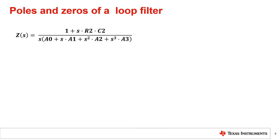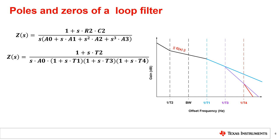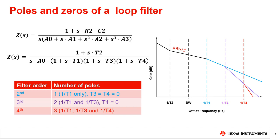The generalized loop filter transfer function we discussed can also be written in terms of poles and zeros. Here T2 is a zero of the transfer function and 1 over T1, 1 over T3, and 1 over T4 are the poles. The gain versus frequency offset graph illustrates how the gain of the open loop transfer function changes with the loop filter order. The blue line shows the gain of the second order loop filter, the purple line shows the gain of the third order loop filter, and the red line shows the gain of the fourth order loop filter. The second order loop filter has one pole, which is 1 over T1. The third order loop filter has two, 1 over T1 and 1 over T3, and the fourth order loop filter has three poles, 1 over T1, 1 over T3, and 1 over T4.